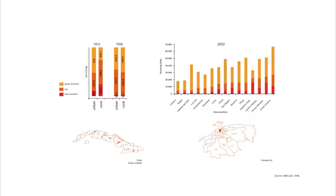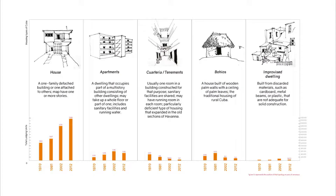Like almost everywhere else in the world, housing is one of the most prominent social problems in Cuba. However, due to its socialist politics, housing policies and provision look very different to the rest of Latin America. For the past 50 years, most Cuban households have owned their homes as personal property, and renting is much less common than in other countries in the region. Over the past 10 years, the Cuban government has been experimenting with the legalization of the housing market.